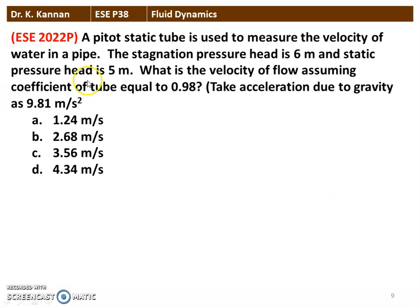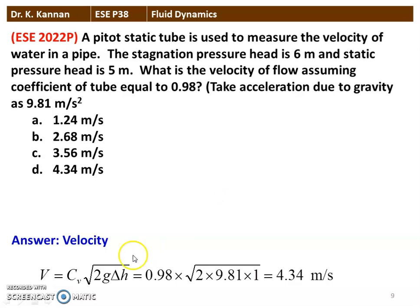The next question is from the 2022 question paper. A Pitot static tube is used to measure the velocity of water in a pipe. The stagnation pressure is 6 m and the static pressure is 5 m. The velocity V = Cv × √(2g·Δh) = 0.98 × √(2 × 9.81 × 1) = 4.34 m/s, where Δh = 6 − 5 = 1 m. The answer is option D: 4.34 m/s.